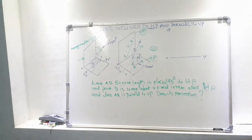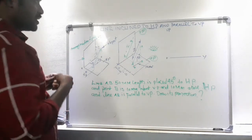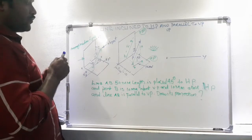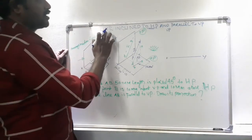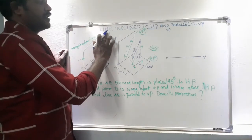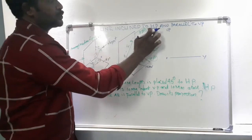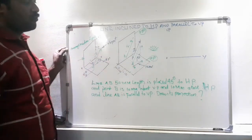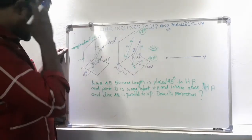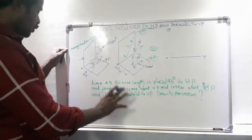Dear students, in this class we have to discuss another type of projection of lines. That means our line is placed inclined to HP and parallel to VP. That is the present problem.